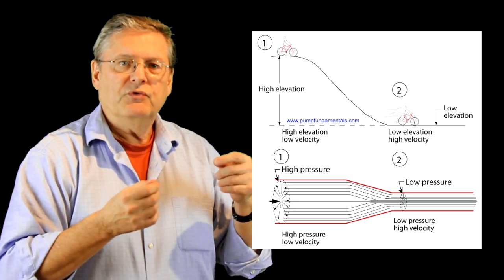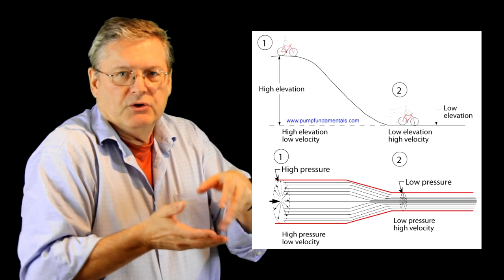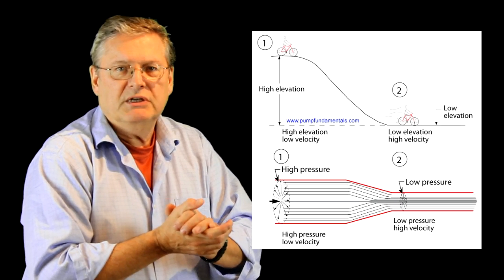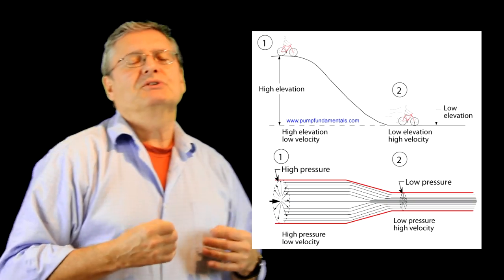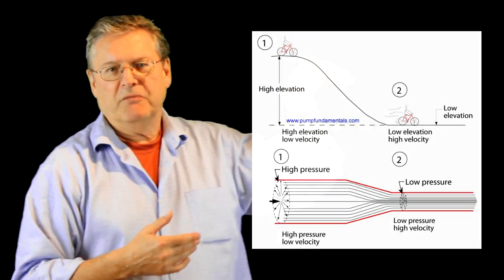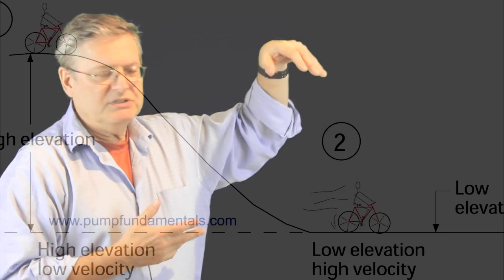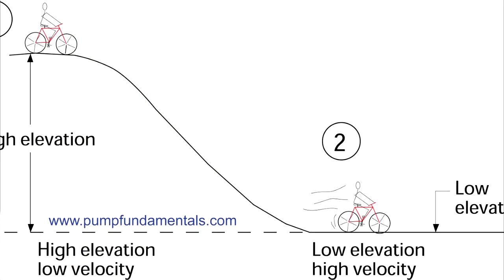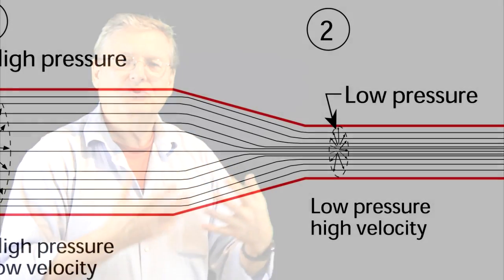We've increased the speed energy, the velocity, at the expense of the pressure. The same thing happens to a cyclist. If he's on the top of the hill he's got zero velocity and as soon as he goes down his velocity increases. At the top of the hill he has what's termed potential energy or elevation energy, and as he lets himself go down that elevation energy drops and his velocity energy increases. The same thing happens within the pipe, although we're talking about two different types of energy.